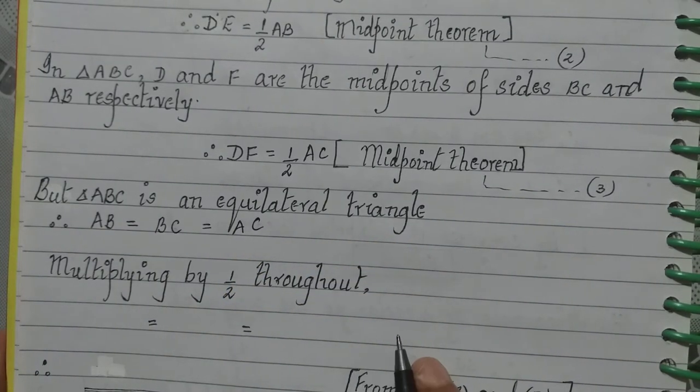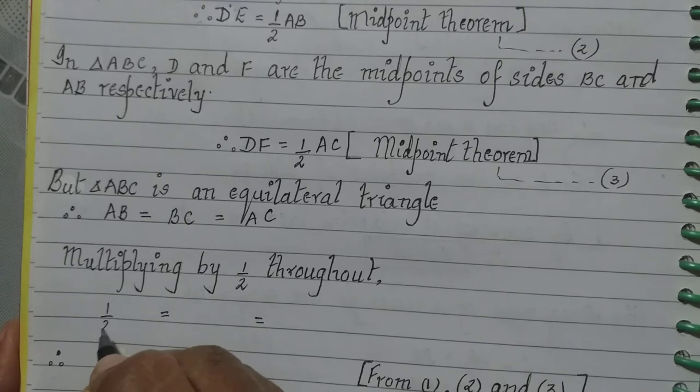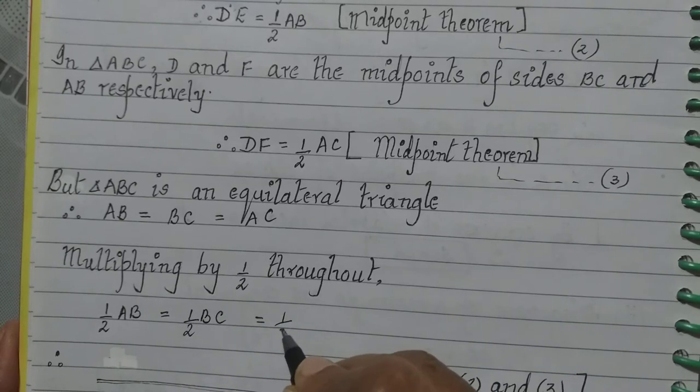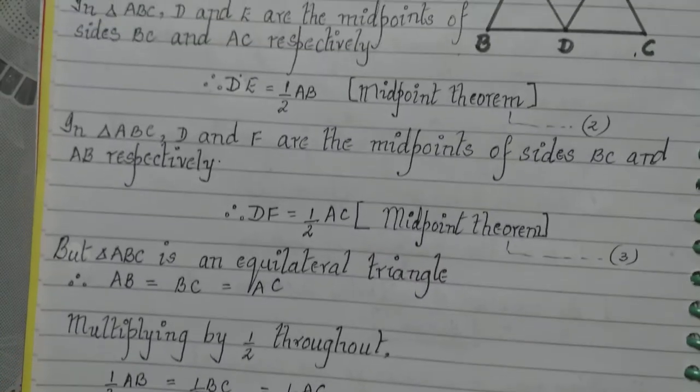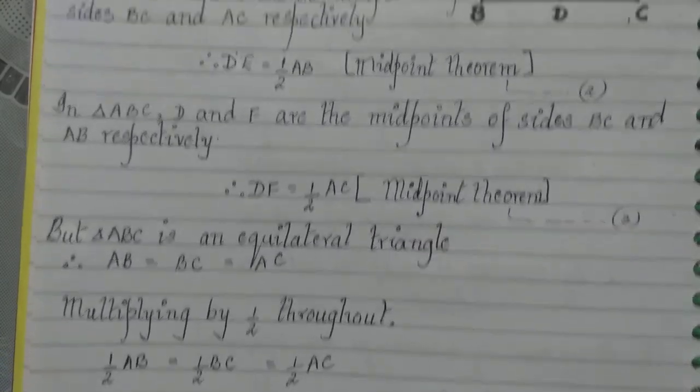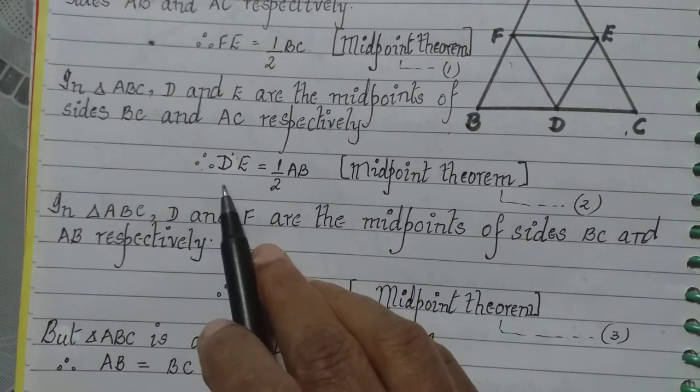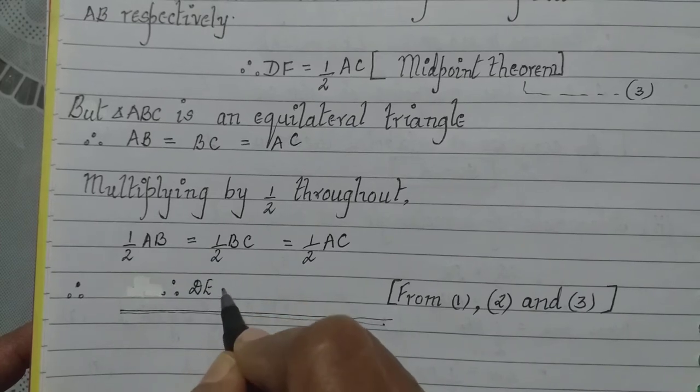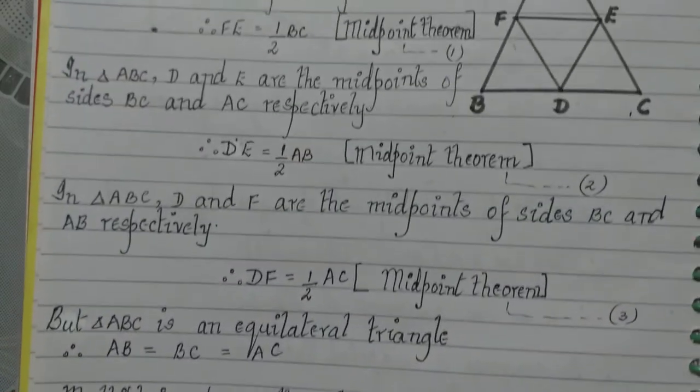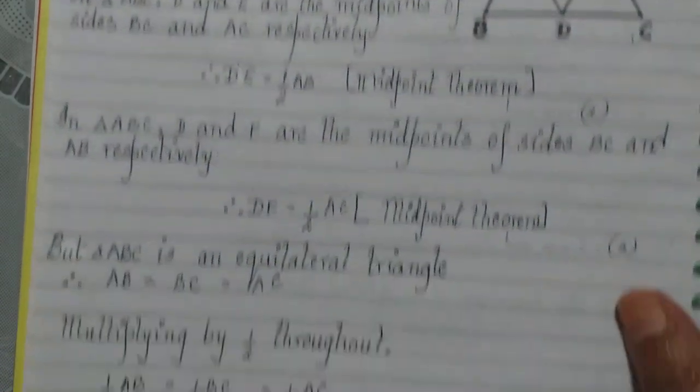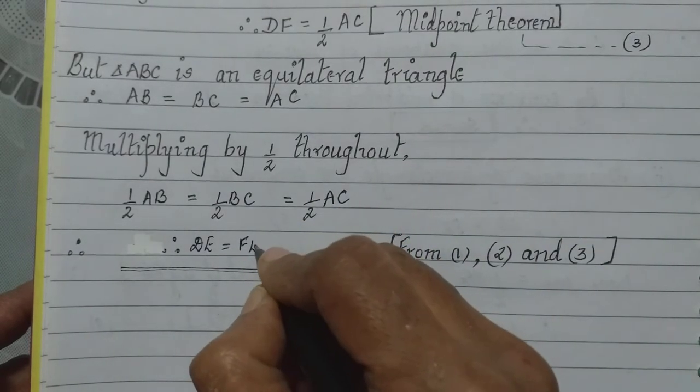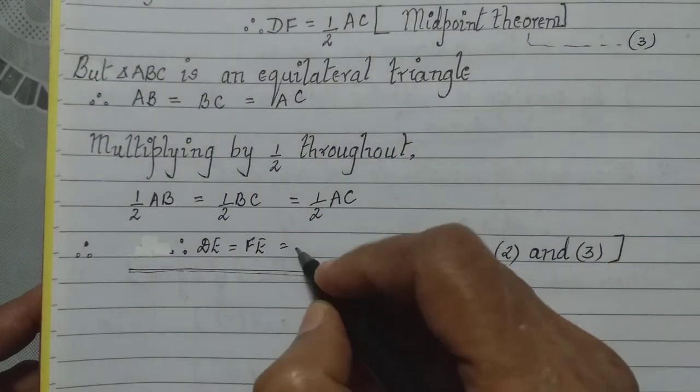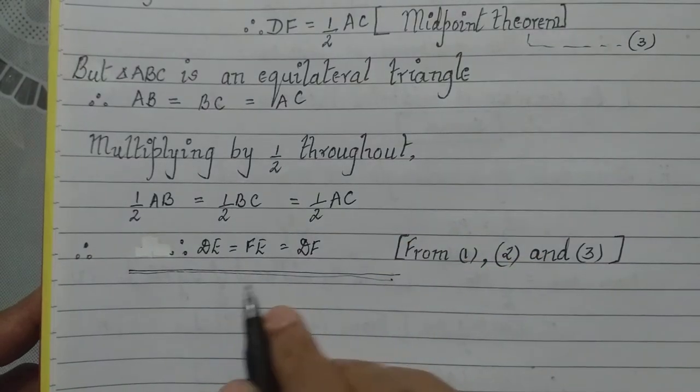If I multiply by half throughout, what do I get? Half AB is equal to half BC is equal to half AC. Now, what I do is I have written here half AB. Let me go back to what is half AB? It is DE. So I write therefore DE is equal to. What is half BC? I have it is FE. So I will write it is FE. What is half AC? Half AC is DF.